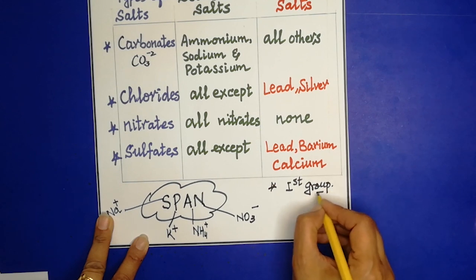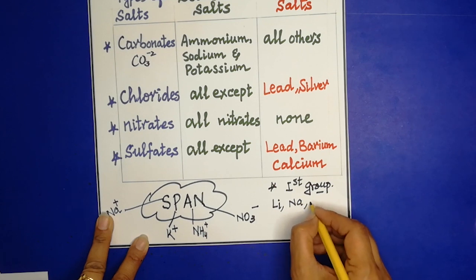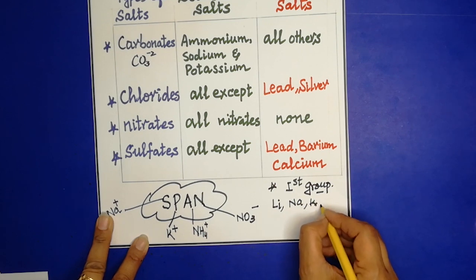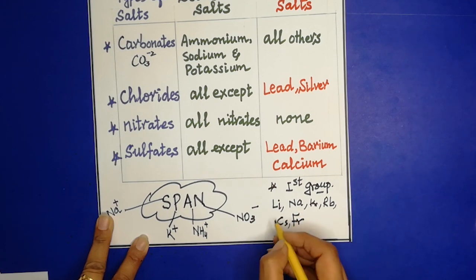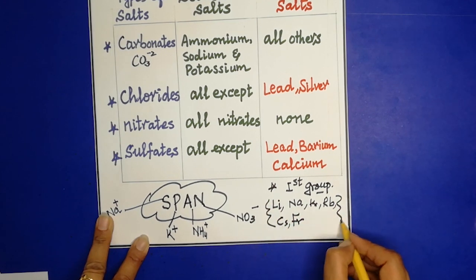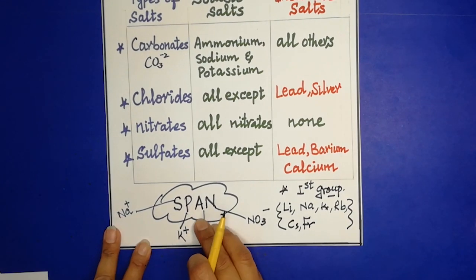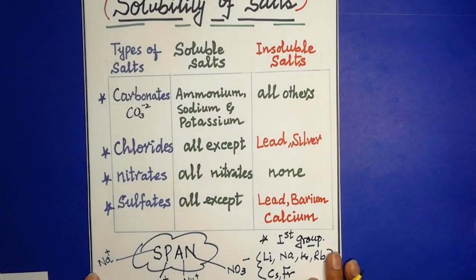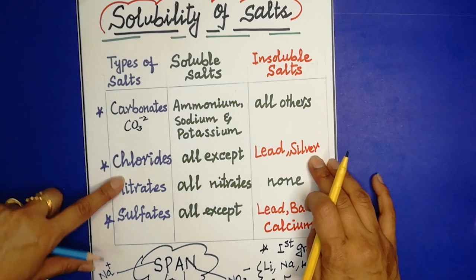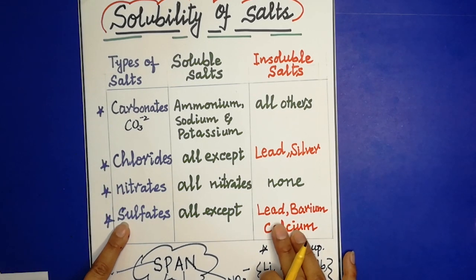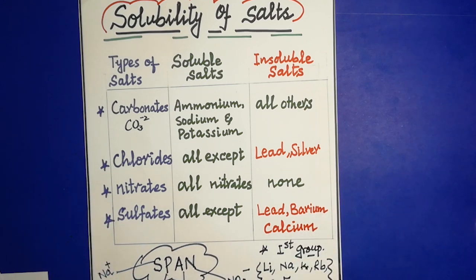Also, all salts of first group elements — lithium, sodium, potassium, rubidium, caesium, francium — are soluble. Remember the word SPAN: sodium, potassium, ammonium, and nitrates are soluble. You just need to memorize the chlorides that are not soluble (lead chloride, silver chloride) and the sulfates that are not soluble (lead sulfate, barium sulfate, calcium sulfate).